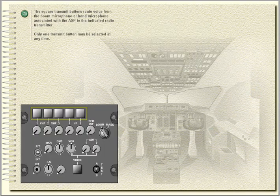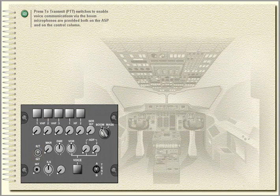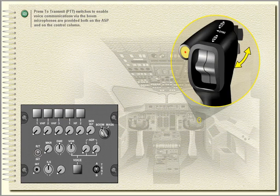The square transmit buttons route voice from the boom microphone or hand microphone associated with the audio selector panel to the indicated radio transmitter. Only one transmit button may be selected at any time. Press-to-transmit switches to enable voice communication via the boom microphones are provided both on the audio selector panel and on the control column.